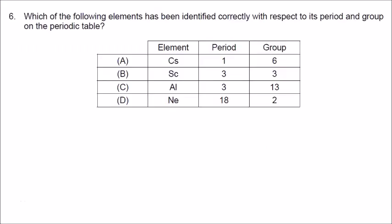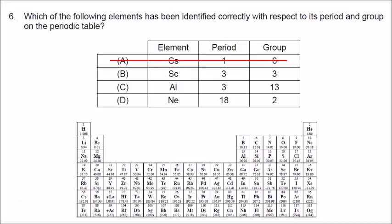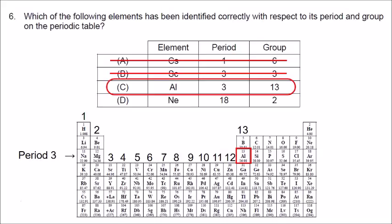Number six: which element has been identified correctly with respect to its period and group? Choice A has Cs (cesium), which is located in period 6, group 1 — so A is incorrect. Choice B has Sc (scandium), located in period 4, group 3 — so B is also incorrect. Choice C, aluminum, is located in period 3 and group 13 — so letter C is correct.